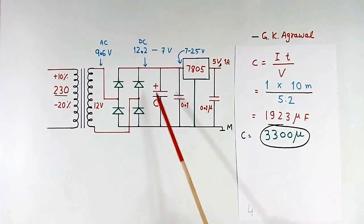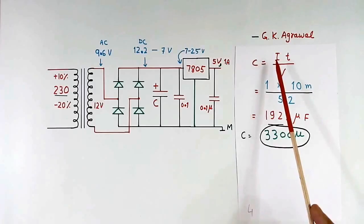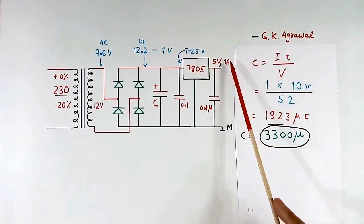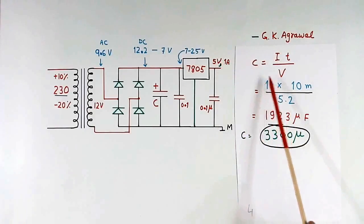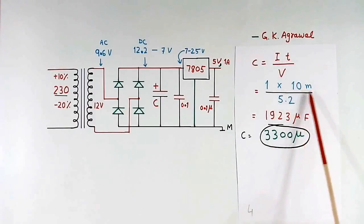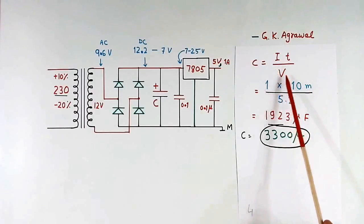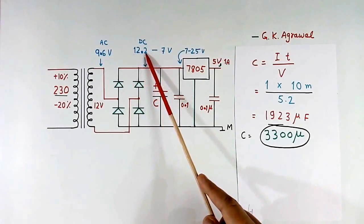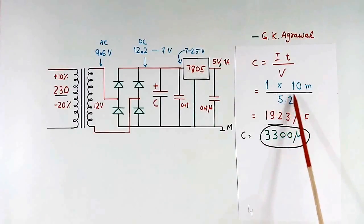Now we will calculate value of this C. Formula is C is equal to I multiplied by T divided by V. I is load current, that is this, I have written 1 ampere. T is half cycle time. For 50 hertz, half cycle time will be 10 ms. And V is voltage drop across this capacitor. What we have calculated, 12.2 minus 7 equal to 5.2 volt. So value will come, this is milli, this is micro farad, 1923 micro farad. So this is the calculated value.